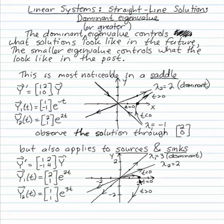The present is the initial condition, t equals 0, at position (2, 0). In the past, it's as if that solution emanated from the weaker solution, the lesser eigenvalue lambda 2 equals 2.